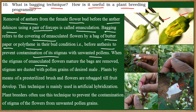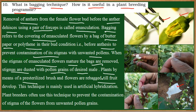When the stigma of the emasculated flower matures and completely grows, the polythene bag or butter paper is removed. The stigma is then dusted with pollen grains from the desired flower. As soon as it is dusted, the bud is again rebagged — covered once more with the polythene bag or butter paper. This flower is allowed to grow further; artificial pollination has been done, fertilization takes place, and the seed or fruit is formed.